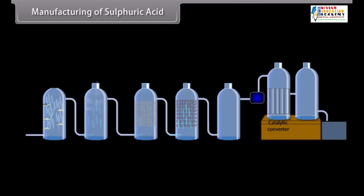After that, drying tower removes the moisture from the gases. Then, gases pass through an arsenic purifier, which removes impurities of As2O3.